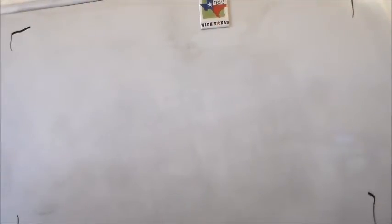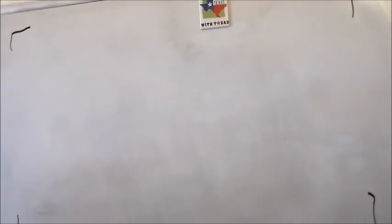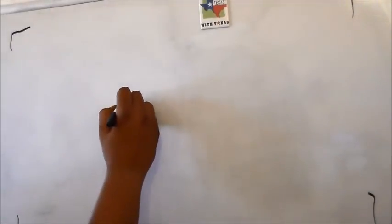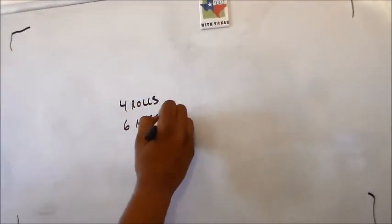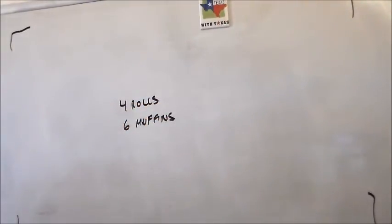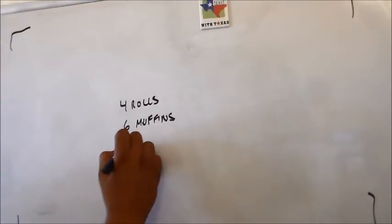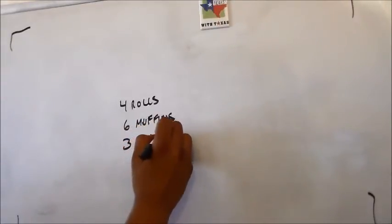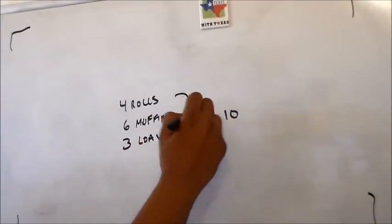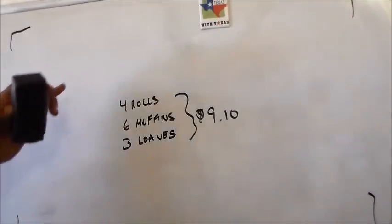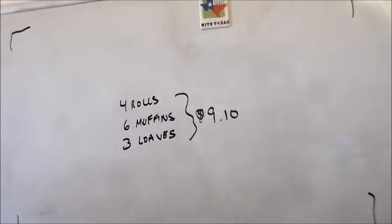All right, ladies and gentlemen, welcome to Arithmetic Reasoning. This question is telling us that the cost of four rolls, six muffins, and three loaves of bread is $9.10. So: four rolls, six muffins, three loaves of bread equals $9.10.